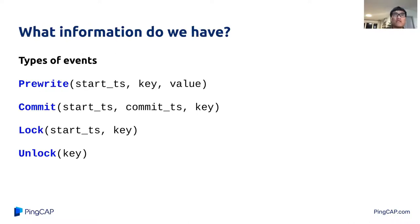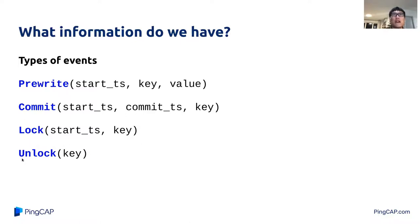This is an overview of the types of events we receive from each region. We have pre-write, which has the start timestamp of the transaction, the key, and the value. We have commit, which is paired with pre-write and contains both start timestamp, commit timestamp, and the key. We have lock, which contains the start timestamp and the key, and we have unlock.